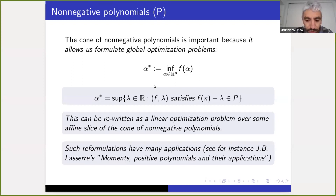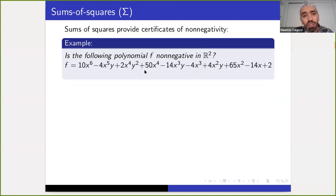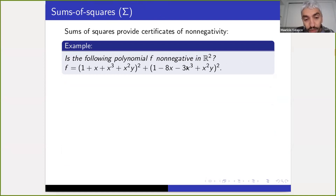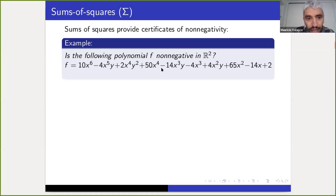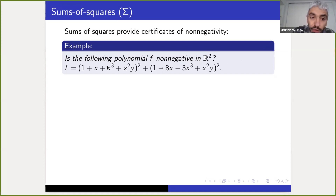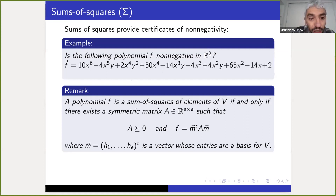Sigma is important for very different reasons — it's important because of simple computation. Suppose somebody asks you whether a polynomial F is non-negative in R^2. That may not be clear. But if the question is whether it's a sum of squares, the answer is obviously yes, because every sum of squares is a non-negative polynomial. Writing a polynomial as a sum of squares is a certificate of its non-negativity, and the key point is that constructing such certificates can be done in an efficient manner computationally.